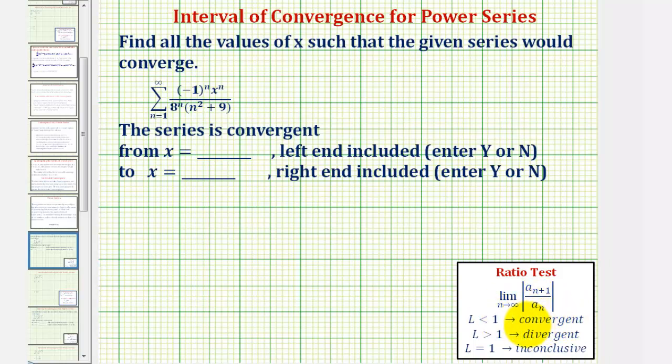This will give us an open interval of convergence, and then from there we'll test the two endpoints to determine if the series converges or diverges at the endpoints.